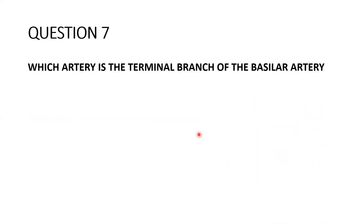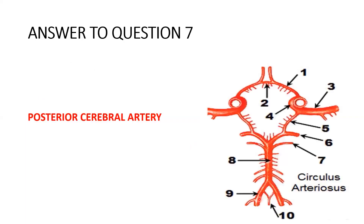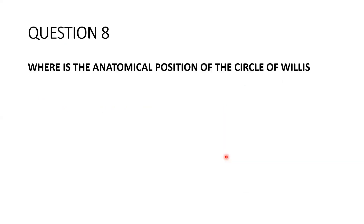Question seven: which artery is the terminal branch of the basilar artery? The two vertebral arteries come together to form the basilar artery — labeled number eight. The basilar artery gives off many branches including the pontine arteries, the labyrinthine artery, and the superior cerebellar artery (number seven), but those are not terminal branches. The terminal branch, labeled number six, is the posterior cerebral artery.